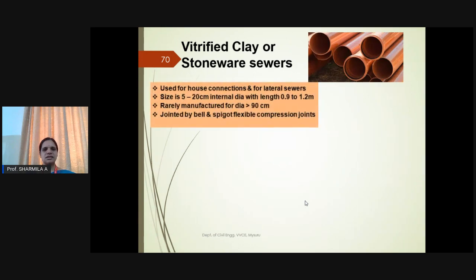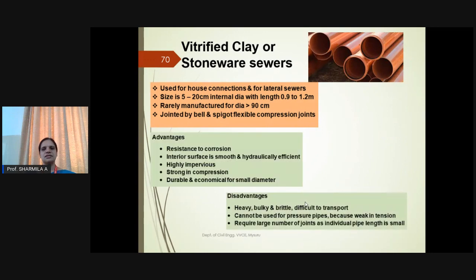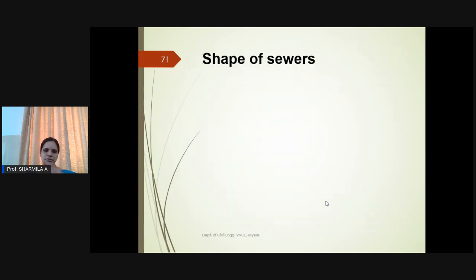High-density polyethylene (HDPE) pipes: not brittle like asbestos cement pipes, hence do not cause damage during handling. Joined by welding or with detachable joints up to 630 mm diameter; commonly used for conveyance of industrial wastewater. Steel receivers: light, impervious, and resistant to high pressure; flexible and absorbs vibration and shock efficiently; used for trunk or outfall sewers, withstands high pressure impact and vibrations better than other pipes. Vitrified clay/stoneware: used in house connections or lateral sewers, size 5–20 cm; resistant to corrosion, smooth interior, impervious, strong in compression, durable and economical for small diameter. Disadvantage: heavy, bulky, and brittle.